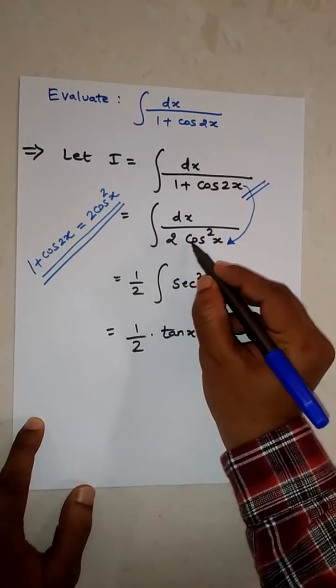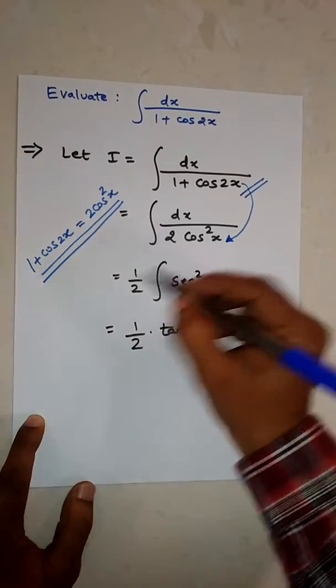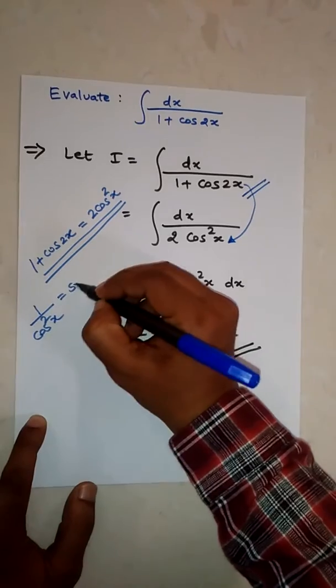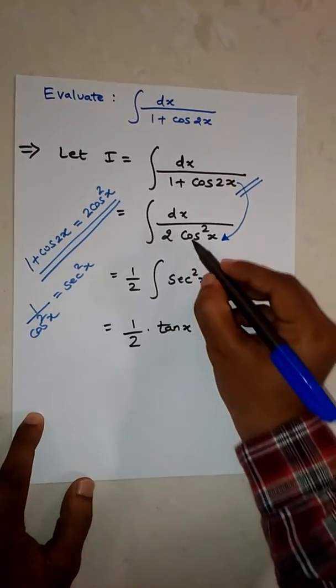After that, 1 upon cos square x is equal to sec square x. So replace cos square with sec square x, and 2 will be outside of the integration.